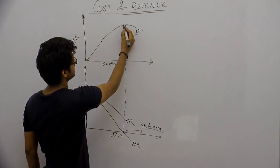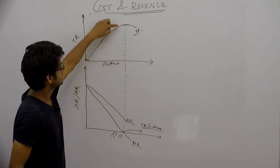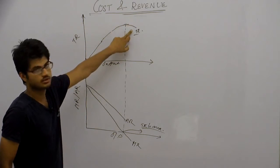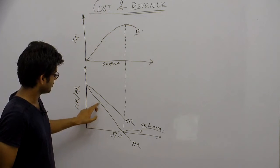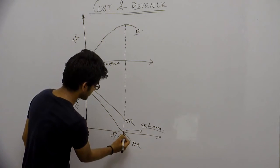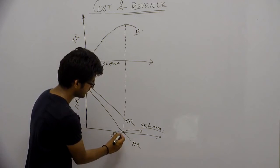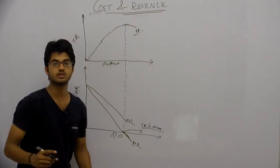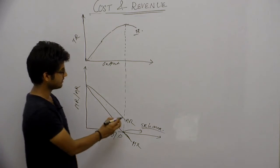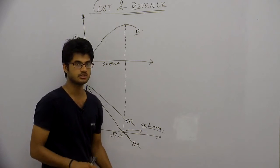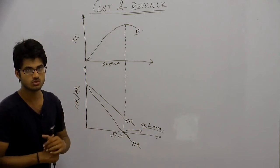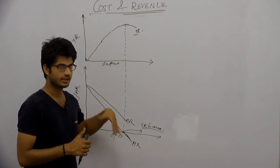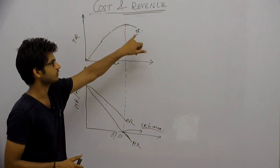When MR is zero, TR is maximum and remains at that constant peak. When MR becomes negative, TR starts declining. MR can go negative beyond that unit — if the producer keeps selling, marginal revenue will be negative. However, average revenue can never be negative; it will always remain above the X-axis. If marginal revenue is negative, total revenue will fall, but total revenue itself can never be negative.